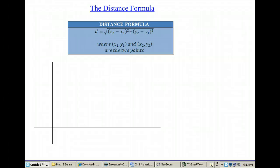The distance formula is given by this formula in the blue box. D, for distance, is equal to the square root of the quantity of x2 minus x1 squared plus the quantity of y2 minus y1 squared, where x1, y1 and x2, y2 are the two points that we're trying to find the distance between.